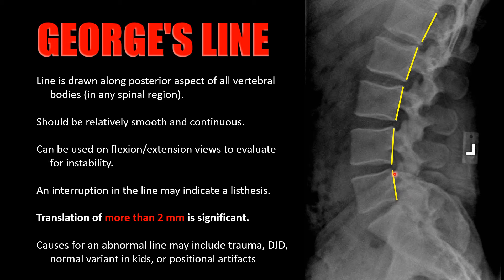With George's line, lines are drawn along the posterior aspects of the vertebral bodies. You are looking for at least two millimeters of anterior or posterior translation. Less than two millimeters of translation is not statistically reliable, so we're looking for at least two millimeters to call it a listhesis.